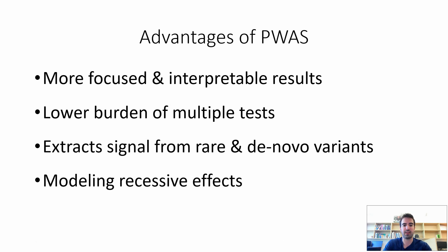A specific area where PWAS really shines is with recessive effects, which GWAS is especially bad at. Even if we wanted to model recessive effects with GWAS, it would only work where you have the exact same variants showing recessive effects. But many times we have compound heterozygosity — the two copies of a gene are each affected by a different variant — and GWAS is completely blind to it. PWAS doesn't care about the identity of the variants and can capture that signal just as well.